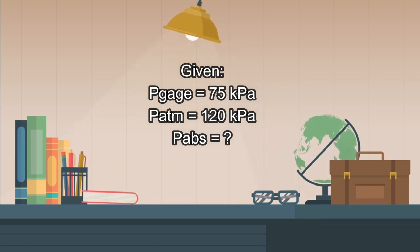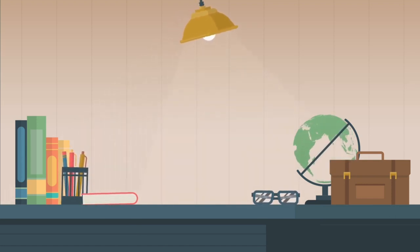The given are: P gauge equals 75 kPa, P atmosphere equals 120 kPa, and the missing value is P absolute.